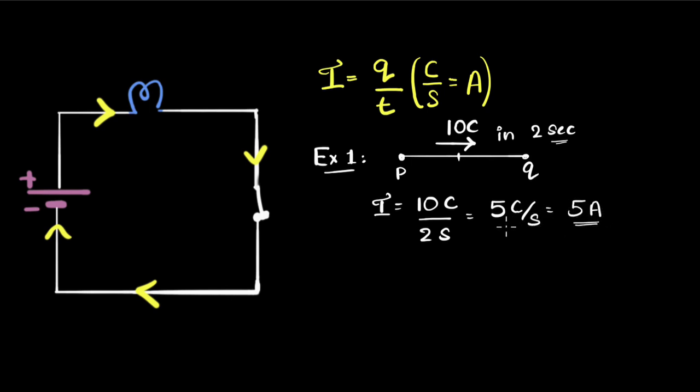Notice I'm not saying that there are five electrons are going per second. No, the charge of an electron is very tiny. So there are billions and billions of electrons flowing, but total 10 coulombs worth of electrons are flowing in two seconds. So five coulombs per second, that gives me five amperes.